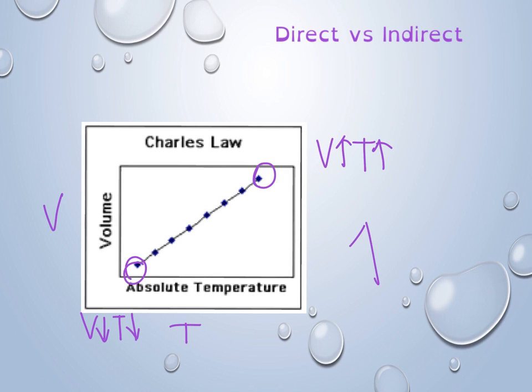And since these variables are in agreement, this is considered to be direct. So as we increase one, the other increases, and vice versa, if we decrease one, the other decreases.